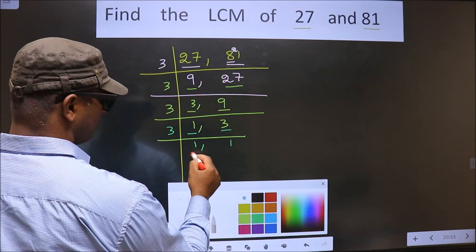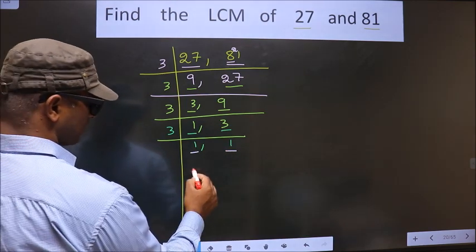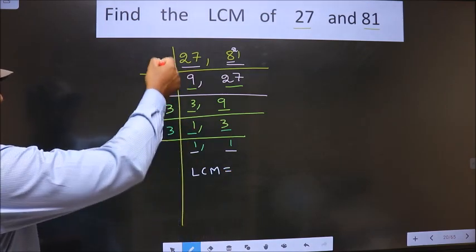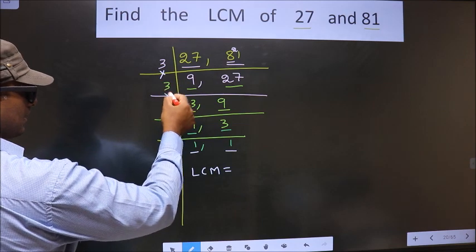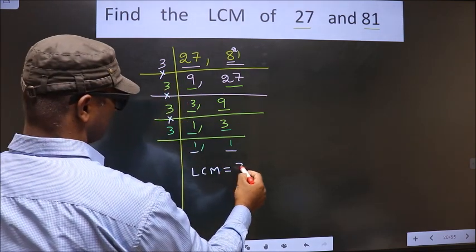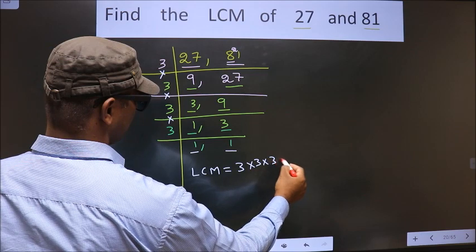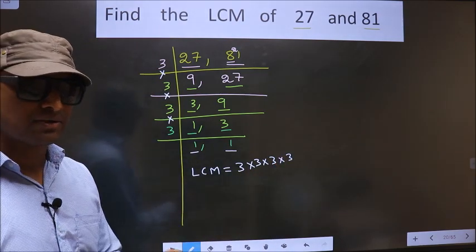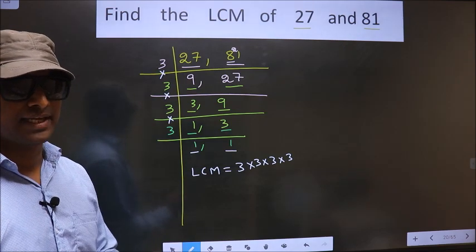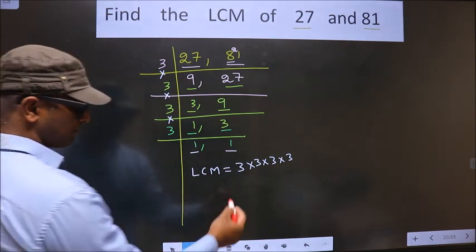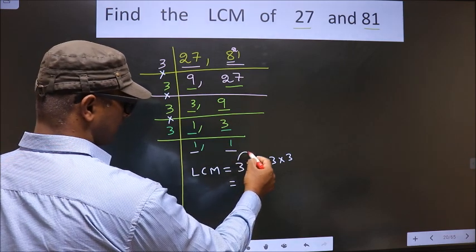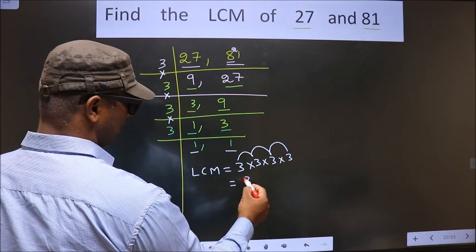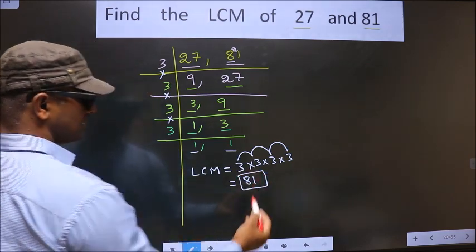So now we got 1 in both the places. So now our LCM is the product of these numbers. That is 3 into 3 into 3 into 3 into 3 — you multiply all these numbers and whatever number you get, that is your LCM. So let us multiply: 3 into 3 is 9, 9 into 3 is 27, 27 into 3 is 81. So 81 is our LCM.